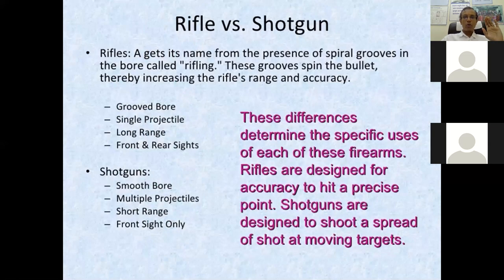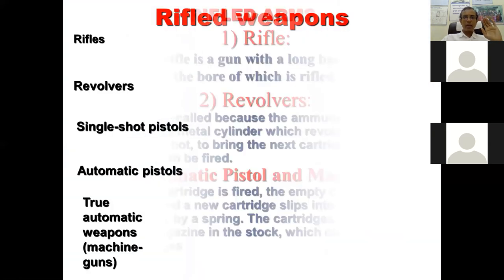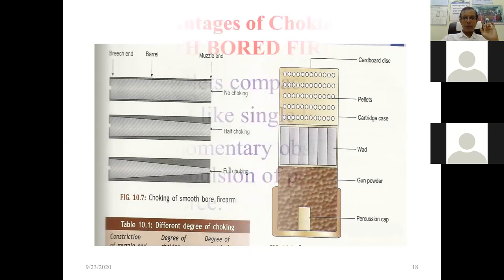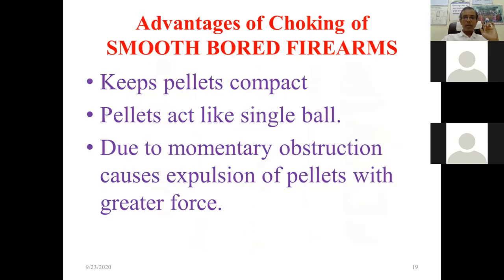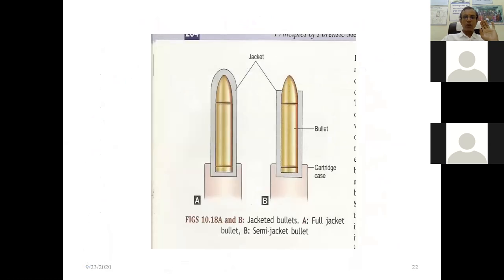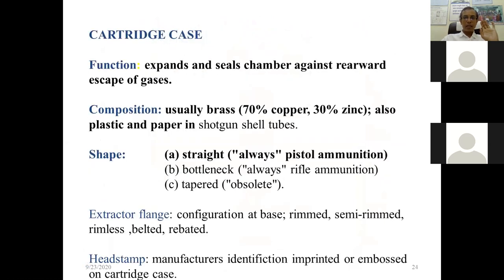We have also seen the makeup of the shotgun firearm ammunition — the shotgun cartridge. Here pellets and wads are present. In a rifle firearm, instead of pellets there is a bullet, and no wad or cardboard is present. That is the basic difference between them.